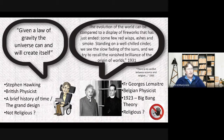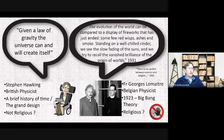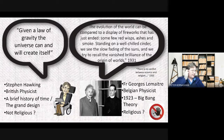Other theories followed: the oscillating universe model — big bang, big crunch — and vacuum fluctuation models. Stephen Hawking proposed various cosmological theories, discussed in A Brief History of Time and The Grand Design. Though it's unclear whether he was atheist or agnostic, his final book The Grand Design, co-written with Mlodinow, appears written from an atheist perspective. He claims: 'Given the law of gravity, the universe can and will create itself.' But can anything truly create itself?